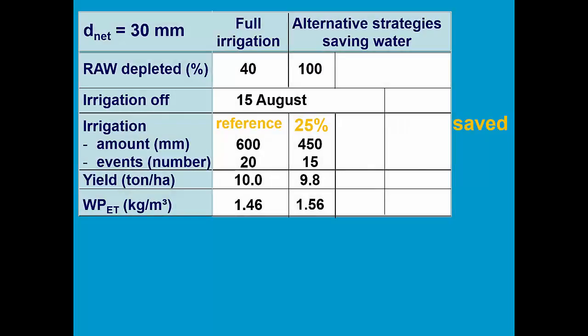In the second alternative irrigation strategy, we further increase the allowable depletion of the root zone after flowering from 100 to 130%. This saves 30% of the water with reference to the full irrigation, and we can save 6 events. The yield drops by 5% and the ET water productivity remains high.